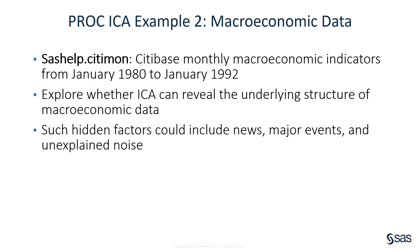The second example uses PROC ICA to perform independent component analysis on microeconomic data. The data used in this example are from the SAS sample dataset CITIMA, which provides city-based monthly microeconomic indicators from January 1980 to January 1992. The purpose of this example is to show how to use PROC ICA to explore whether independent component analysis can reveal the underlying structures of microeconomic data. Such hidden factors could include news, major events, and unexplained noise.